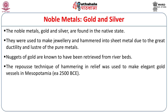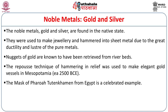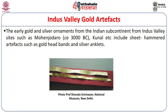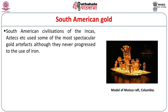The mask of the pharaoh Tutankhamun from Egypt is another celebrated example. In the Indus Valley sites, gold and silver ornaments were found at sites such as Mohenjo-daro going back to 3000 BCE, and Kunal, which included several sheet-hammered artifacts such as gold headbands, silver anklets, and fish motifs made by the Repoussé technique.